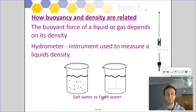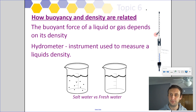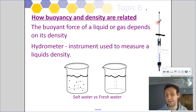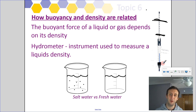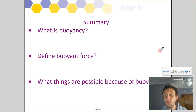The buoyant force of a liquid or gas depends on its density. One way to measure this for a liquid is using a hydrometer. Depending on how much it sinks, it tells us how much buoyant force we have. In a lower density fluid the hydrometer sinks further, and in a higher density fluid it sinks less. So we can use a hydrometer to measure the density, and there'll probably be a demo on this later.